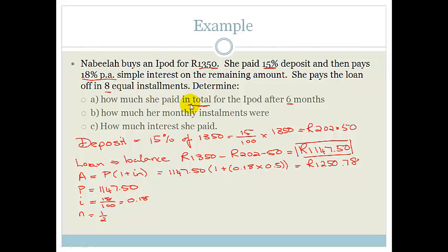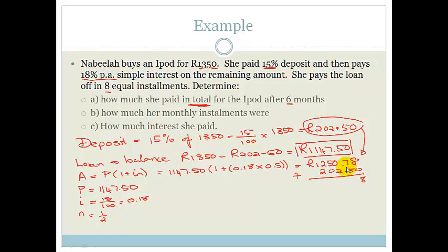They asked what she paid in total, so we need to add her deposit to the total amount she paid on the loan. We add 202 Rand and 50 cents to 1,250 Rand and 78 cents, giving us a total of 1,453 Rand and 28 cents.